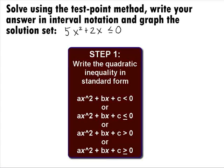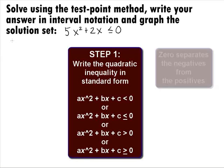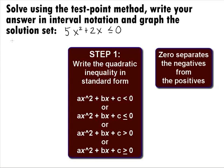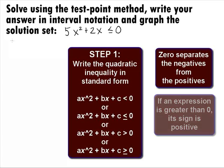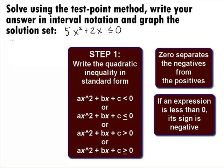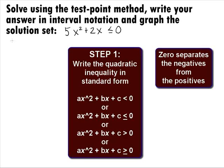In Step 1, we want to write the quadratic inequality in standard form. The standard form for a quadratic inequality is just like the standard form for quadratic equations: ax squared plus bx plus c, either less than or greater than 0. The reason we are doing this is 0 is our magic number — it is the only number that separates the negatives from the positives. If an expression is greater than 0, its sign is positive; if it is less than 0, its sign is negative. We cannot say this about any other number. Since we are working with inequalities, this idea will come in handy. With this technique, we will be looking at the sign of a number to determine if it is a solution or not.